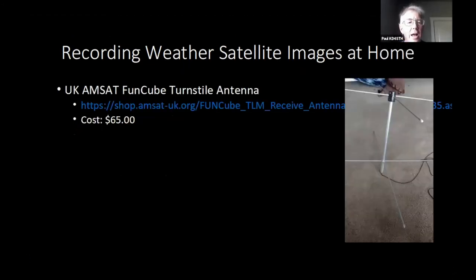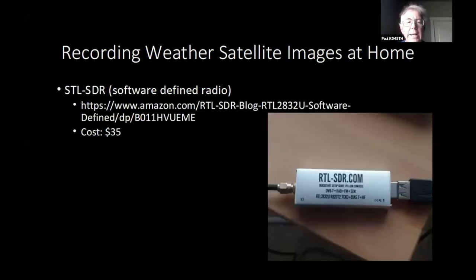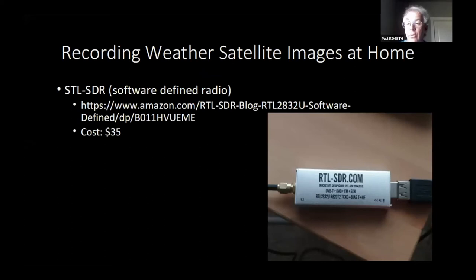The turnstile antenna I got was from MSAT UK, built for the FunCube satellite — about $65. You can also make your own; they're fairly easy to make. The SDR radio from Amazon was $35 — the standard RTL-SDR radio from rtlsdr.com. So we're talking about $100 for the hardware.